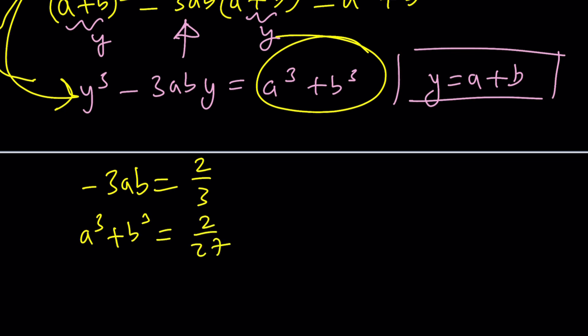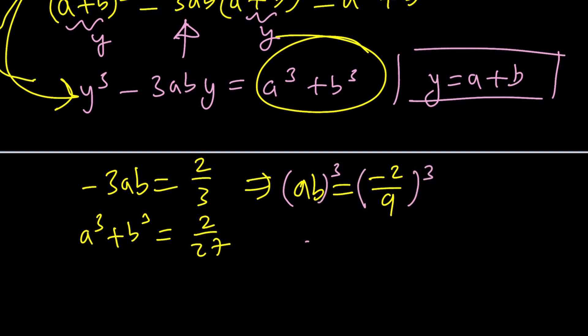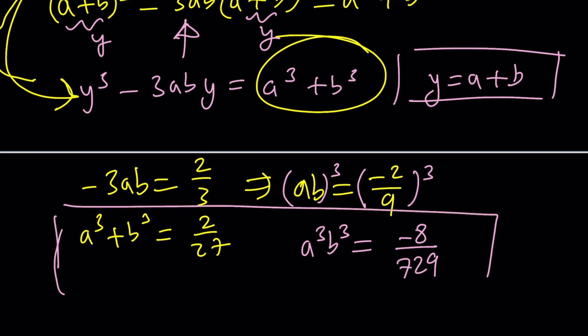This gives us a system which may look cubic, but it's actually quadratic, because if you cube both sides and isolate ab first — multiplying both sides by negative one-third gives you negative two-ninths on the right-hand side — then you cube both sides and get a cubed times b cubed. So a cubed times b cubed equals negative 8 over 729, because 9 cubed equals 729.